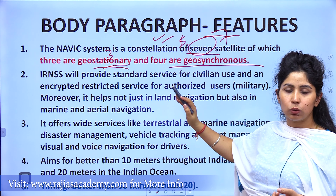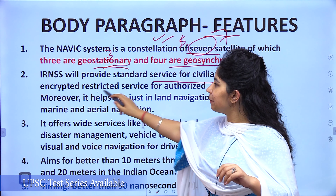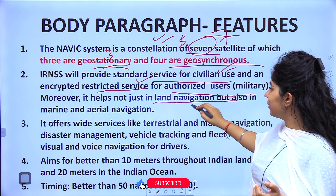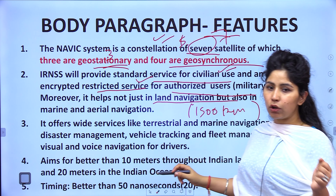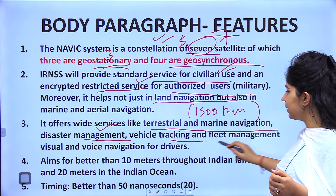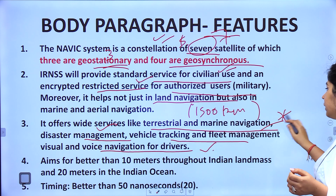When discussing a satellite-based navigation system, it is important to mention where the satellites are placed. NAVIC is a constellation of 7 satellites, out of which 4 are in geosynchronous orbit and 3 are in geostationary orbit. This has been asked in the UPSC Civil Services Examination, around 2018, in the prelims itself. NAVIC will provide standard service for civilian use and encrypted or restricted service for authorised users such as the military. It helps not just in land navigation but also in marine and aerial navigation up to 1,500 kilometres beyond Indian borders.